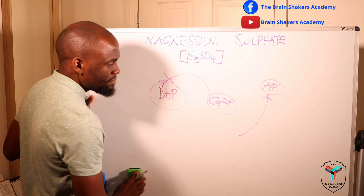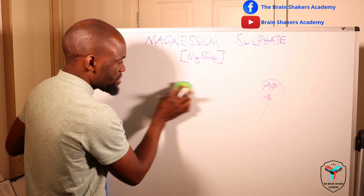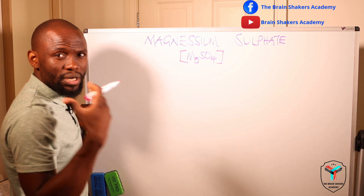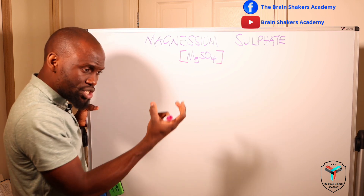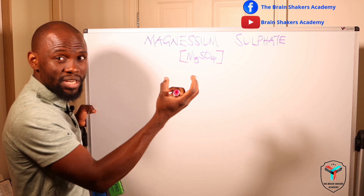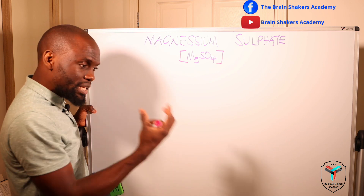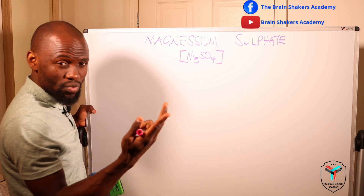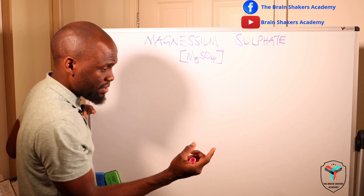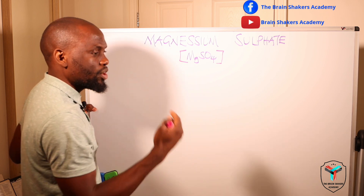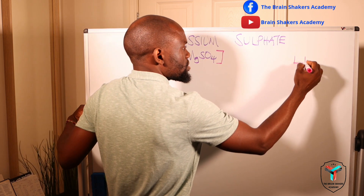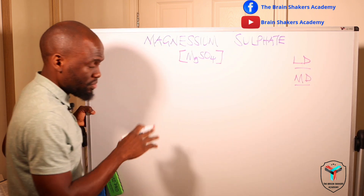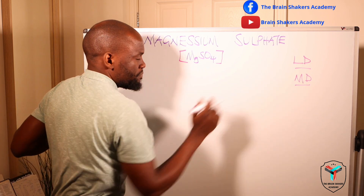Magnesium sulfate comes in different presentations, but the commonest is a 50% concentration. When administering it, you need to reduce the concentration from 50% to 20%. The principle of administration is the same regardless of method: you give a loading dose first, then a maintenance dose.